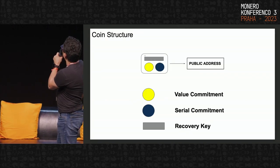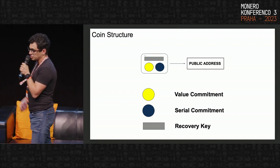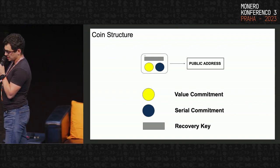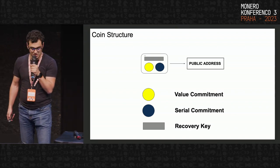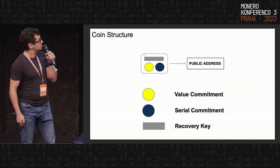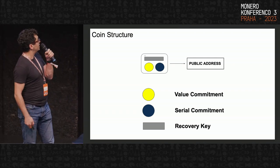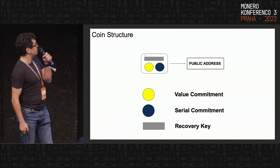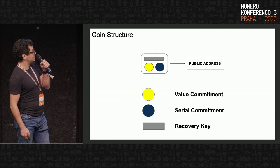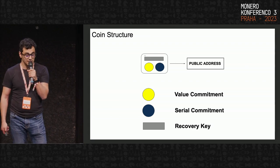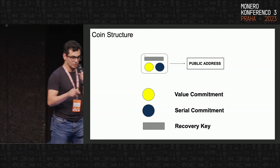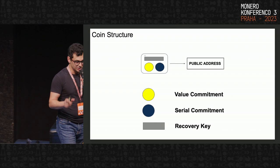Spark works in the UTXO model: users are minting and burning coins. Every coin is composed of a separate value commitment and serial commitment, unlike the original Lelantus coins which have a more monolithic structure.